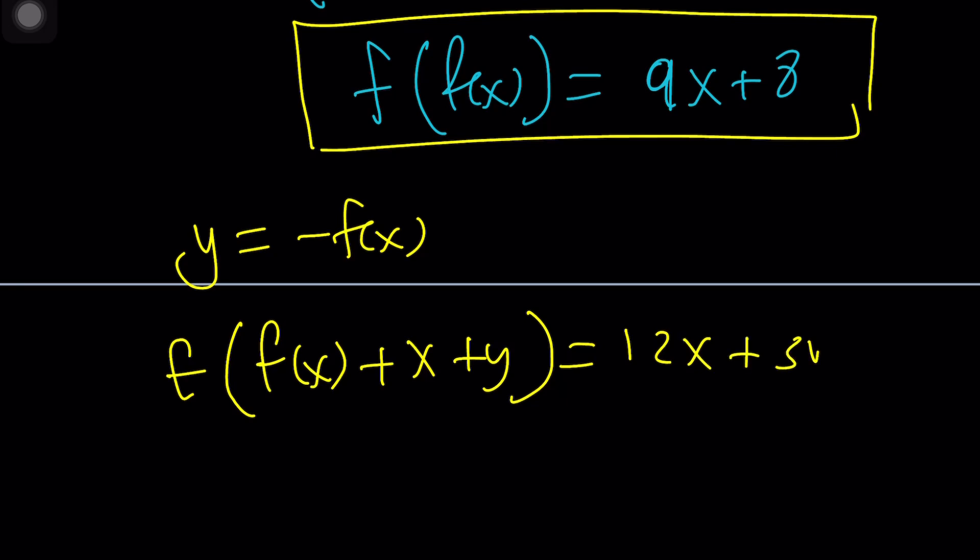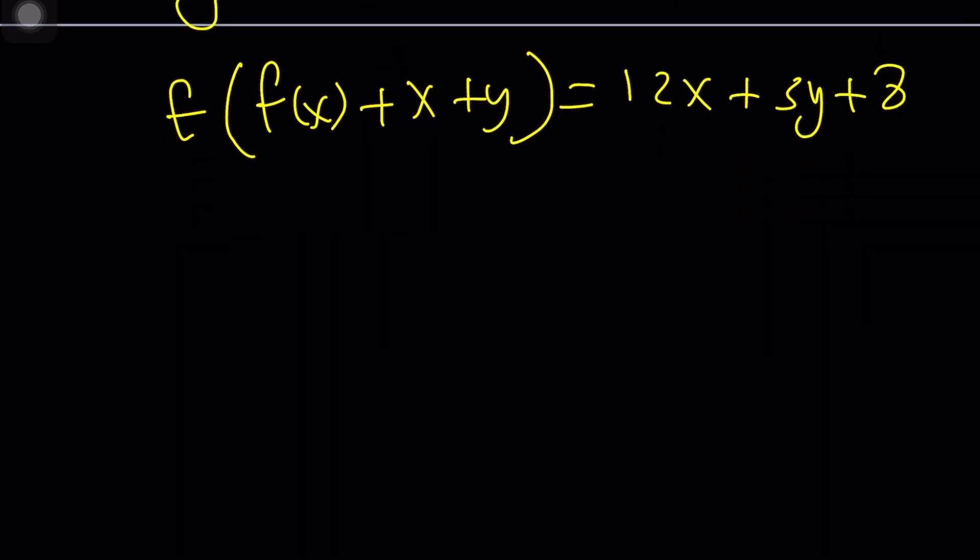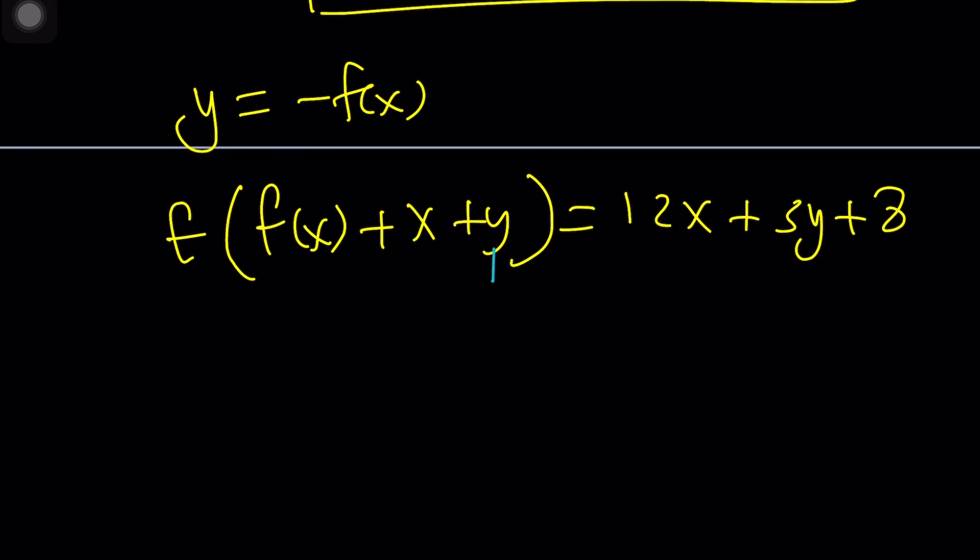Like I said earlier, I didn't prep for the solution. I'm just thinking about it right now. If you replace y with negative f of x, f of x and negative f of x are going to cancel out. Of course, you have to do it on both sides. And these two are going to cancel out, leaving us with f of x. Beautiful.